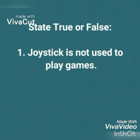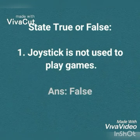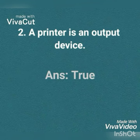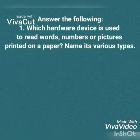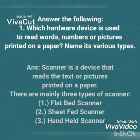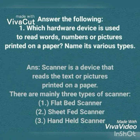State true or false: first, joystick is not used to play games — it's false, joystick is used to play games. Second, a printer is an output device — it's true. Answer the following: which hardware device is used to read words, numbers, or pictures printed on a paper? The answer is scanner. There are three types: flatbed scanner, sheet fed scanner, and handheld scanner.